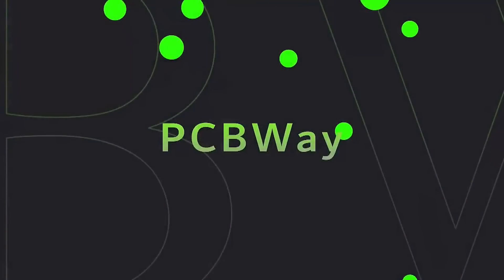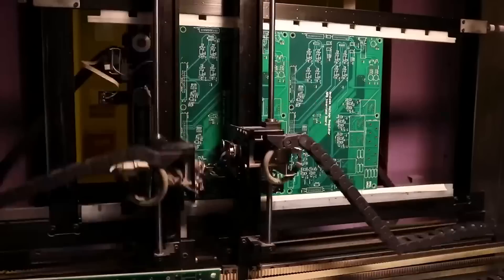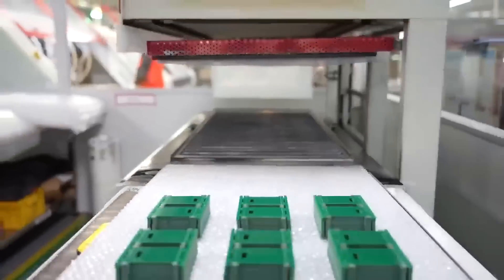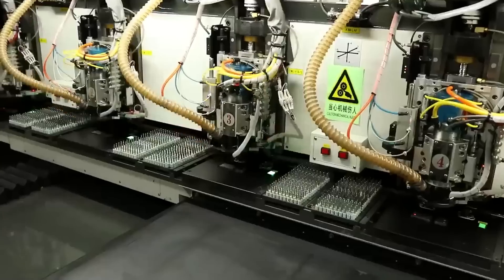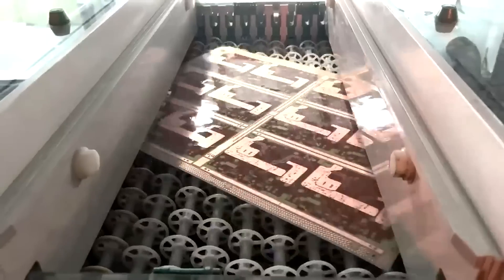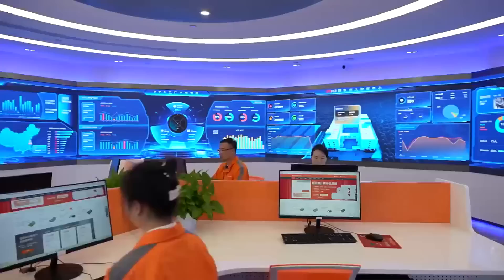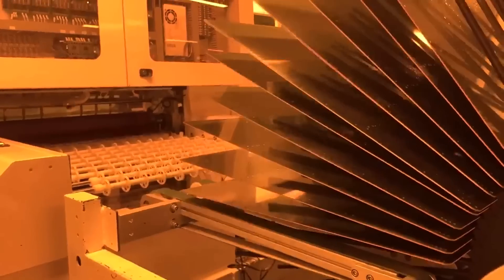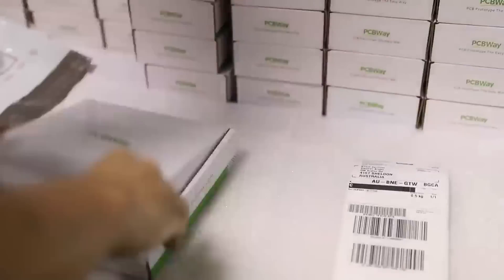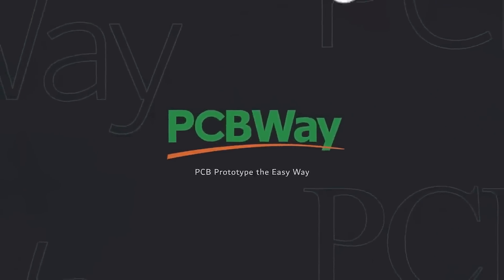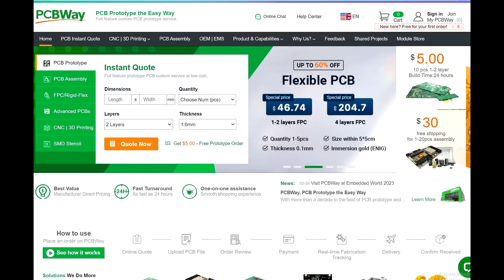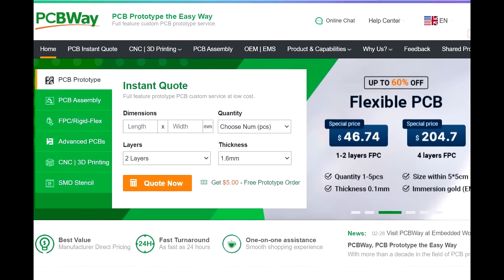Before we start the video, I want to give a shout out to our sponsor PCBWay. PCBWay is a China Shenzhen-based PCB manufacturer and printed circuit board assembler with more than a decade in the field of PCB prototype and fabrication. They offer a wide variety of services including 3D printing, CNC machining, sheet metal fabrication, and much more. PCBWay is committed to meeting all your PCB needs. They offer quality on-time delivery and competitive pricing. One to two-layer boards start at $5 with 24 hours turnaround. Get an instant quote by visiting PCBWay.com or click on the link below.